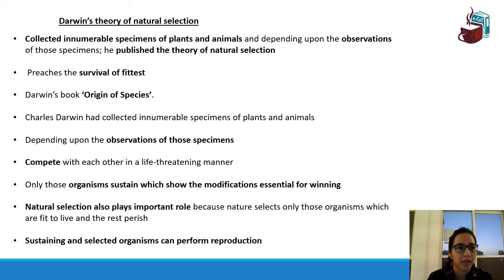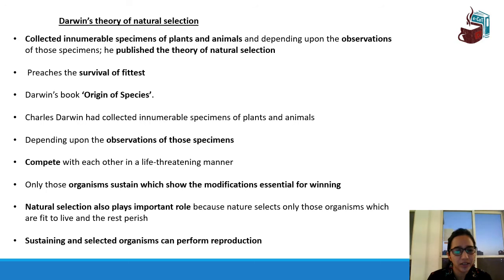Darwin's theory of natural selection: he collected innumerable specimens of plants and animals, and depending upon his observations he published the theory of natural selection. It preaches survival of the fittest. In his book, Origin of Species, Charles Darwin noted that organisms compete with each other in a life-threatening manner. Only those organisms sustain which show modifications essential for winning. Natural selection means nature selects only those organisms which are fit to live, and the rest perish. Sustaining and selected organisms can perform reproduction.